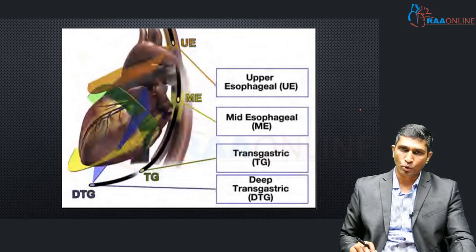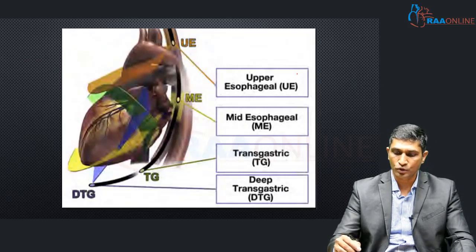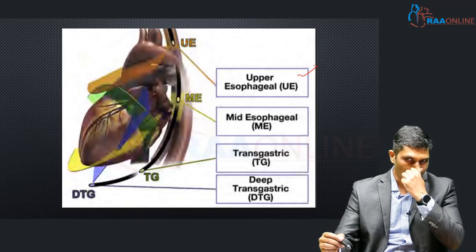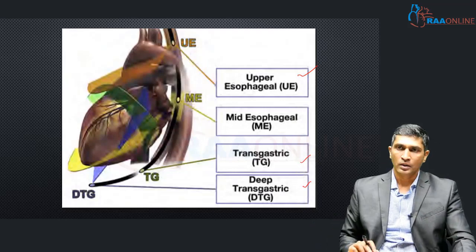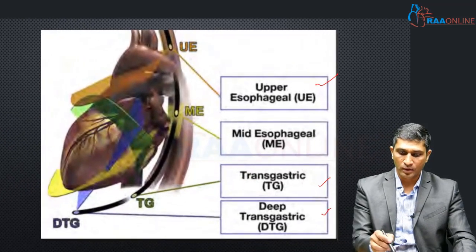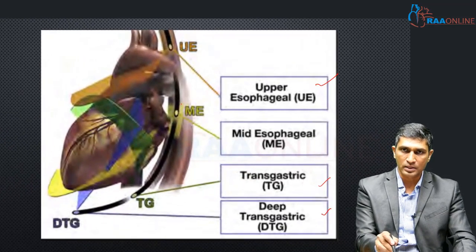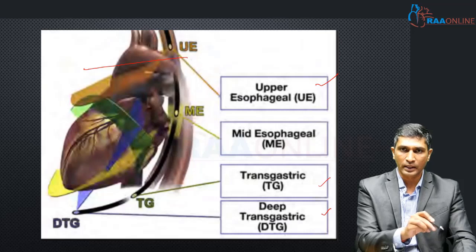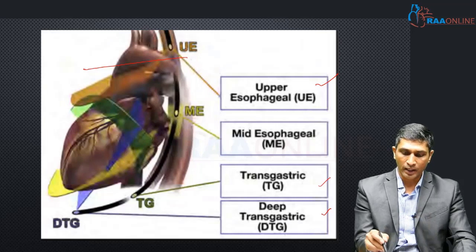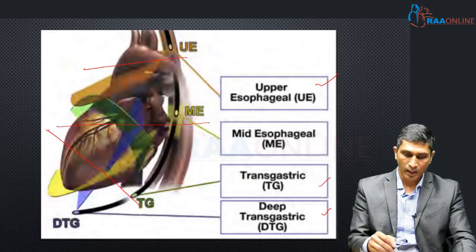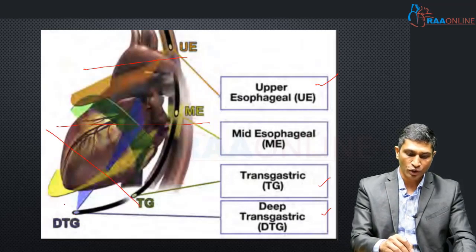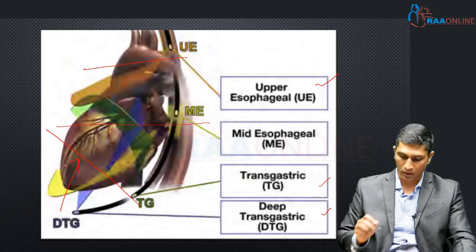Based on the depth of the probe, views are classified as upper esophageal views, mid esophageal views, transgastric views, and deep transgastric views. The upper esophageal is usually at the great vessel level. Most views are from the mid esophageal, while the transgastric and deep transgastric views visualize the heart from the stomach.